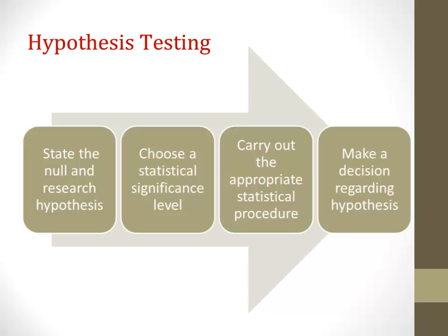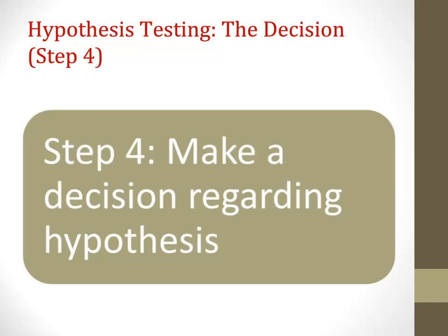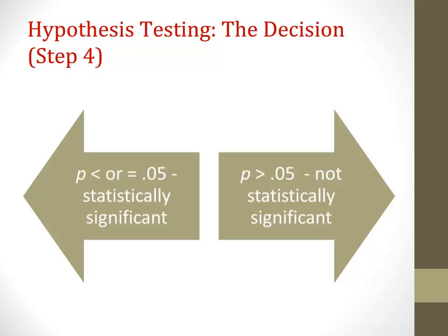We now move on to the fourth and final step of hypothesis testing: making a decision regarding the null hypothesis based on the results of your statistical procedure. Each analysis yields a test statistic and a p-value that represents the probability that the null hypothesis is false. If the p-value is equal to or lower than the significance level you established prior to conducting the analysis, you reject the null hypothesis. If it is more than the significance level, you fail to reject the null hypothesis.